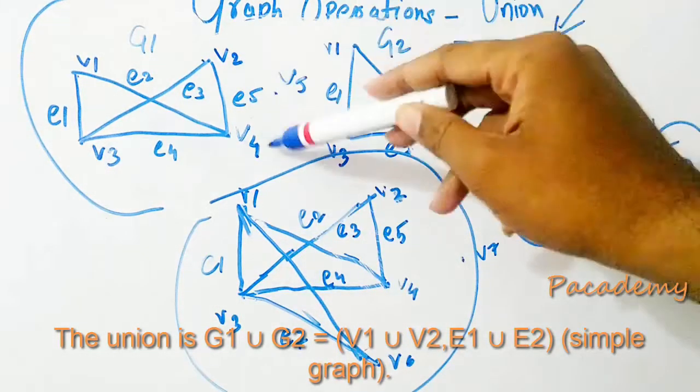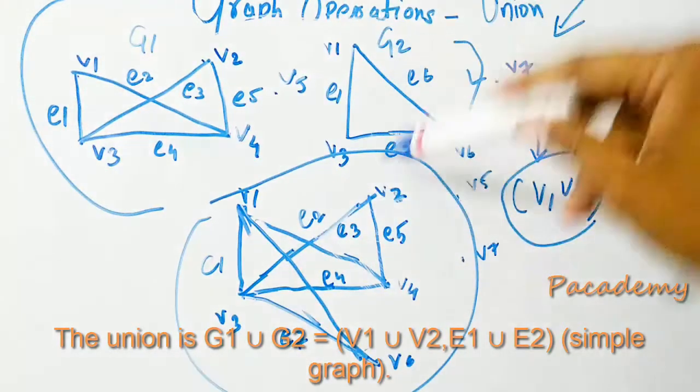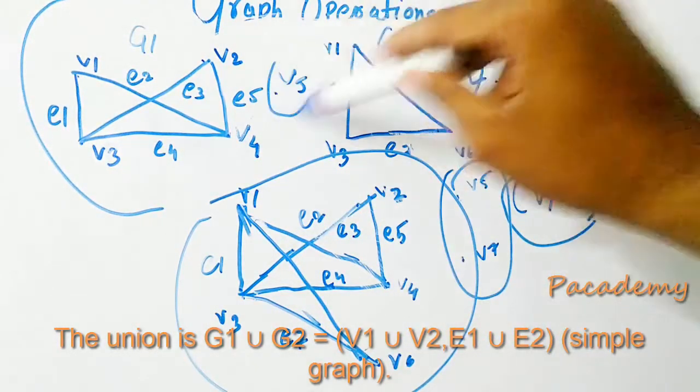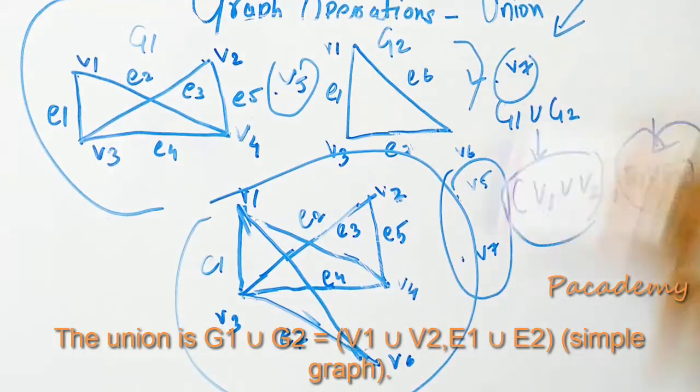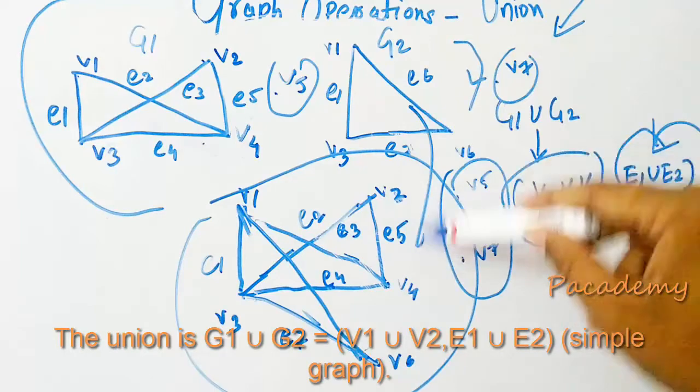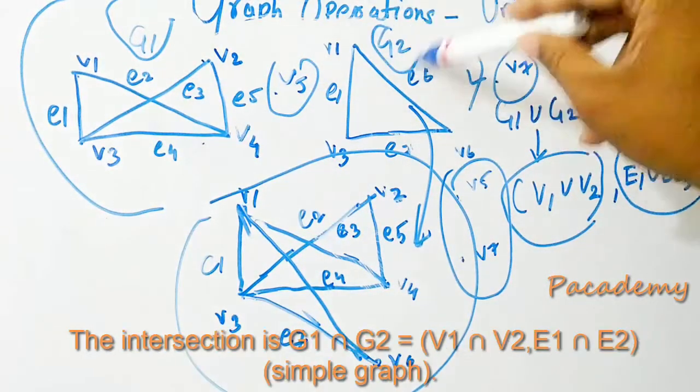It has all the vertices which are there connected by edges, and all the other vertices like V5 and V7 which are not connected. This is the union of both these graphs G1 and G2.